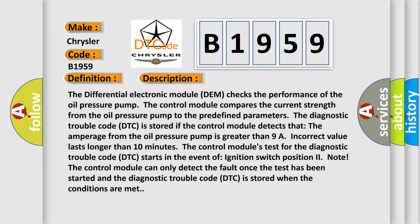The control module compares the current strength from the oil pressure pump to predefined parameters. The Diagnostic Trouble Code (DTC) is stored if the control module detects that the amperage from the oil pressure pump is greater than 9A, and the incorrect value lasts longer than 10 minutes. The control module's test for the DTC starts in the event of ignition switch position 2. The control module can only detect the fault once the test has been started, and the DTC is stored when the conditions are met.